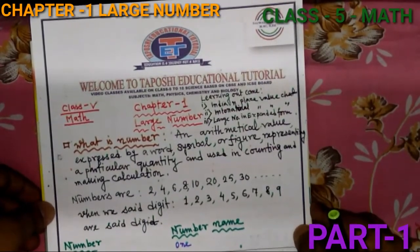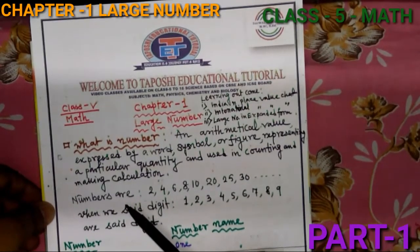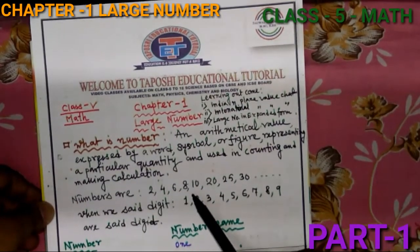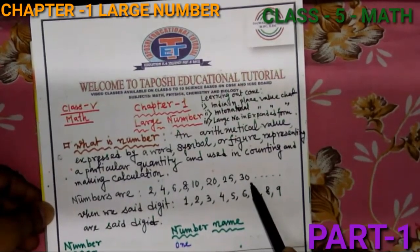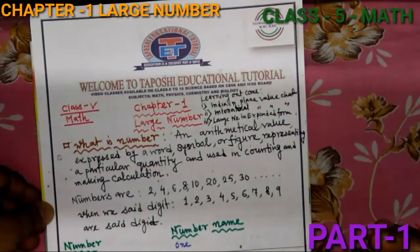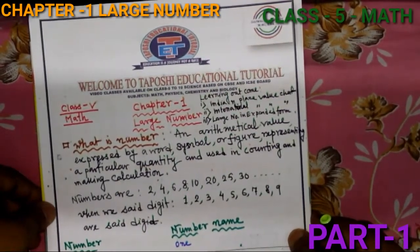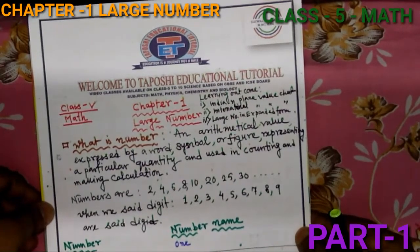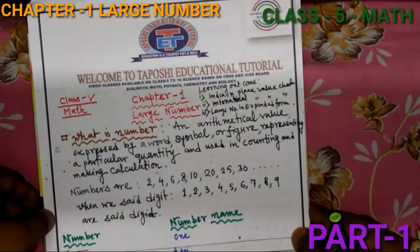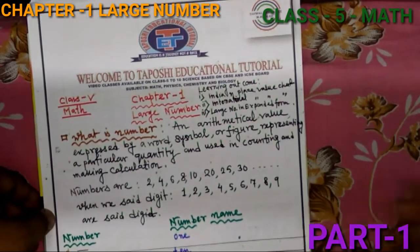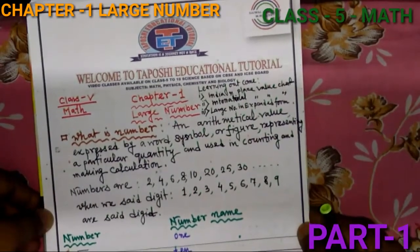Looking here, the numbers are 2, 4, 6, 8, 10, 20, 25, 30, and so on. Many numbers are there. Numbers may be countable or uncountable. When we say 'digit,' that means 1 to 9 — all of these are digits.